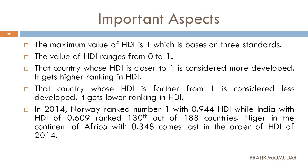The country with the lowest HDI was Niger, located in the continent of Africa, which scored 0.348 and received the last rank — 188th out of 188 countries. So to summarize: Norway ranked 1st with 0.944, India ranked 130th with 0.609, and Niger ranked 188th with 0.348. In the year 2014, 188 countries participated in the HDI ranking.